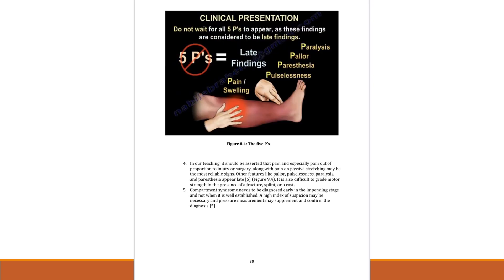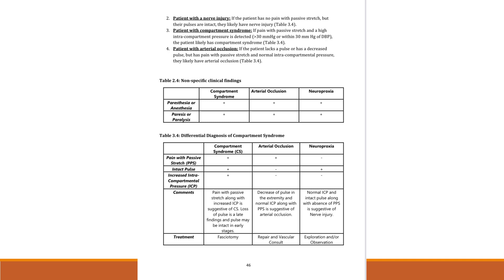The delayed findings include the five P's — but don't wait for them. There is also a chapter on the difference between compartment syndrome, arterial occlusion, and neuropraxia.